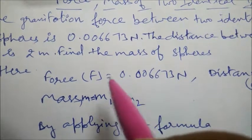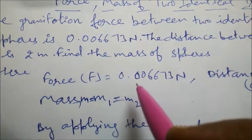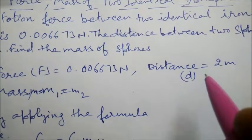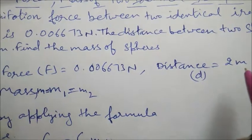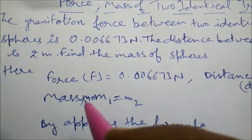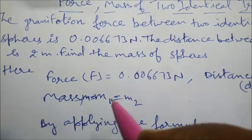So we have been given the force equal to 0.006673 Newton. Distance between the two identical spheres is 2 meters. Let the mass be M, M1 of the first object,